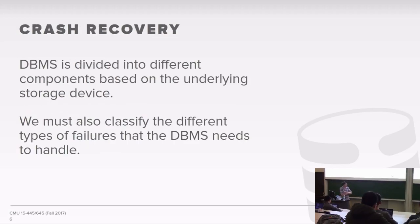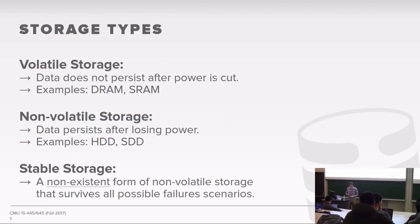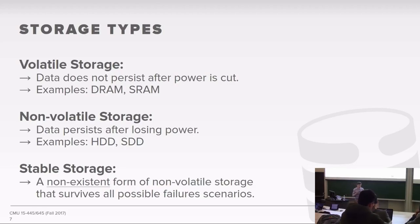For crash recovery, we divide the database system into components based on the underlying storage device used as the backing store. Based on these storage devices, we can come up with different classifications of failure types. In every database system there are three categories of storage. The first is volatile storage, which is just memory — typically fast DRAM you can read and write to very quickly. It's called volatile because if you lose power, all your data is lost. There have been experiments at CMU showing you can still read DRAM for about 30 seconds after cutting power, but in practice, you assume anything in memory is completely gone.